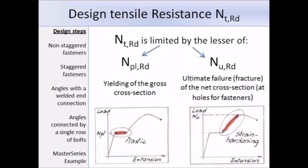The value of the design tensile resistance will be the lesser of either N_pl,Rd or N_u,Rd. N_pl,Rd is the plastic design resistance, related to the yielding of the gross cross-section, occurring in this region of the load extension graph. N_u,Rd is the design ultimate resistance of the net cross-section, related to ultimate fracture of the net cross-section, which will normally occur at fastener holes. Note that Eurocode 3 uses the term fasteners to cover bolts, rivets and pins.